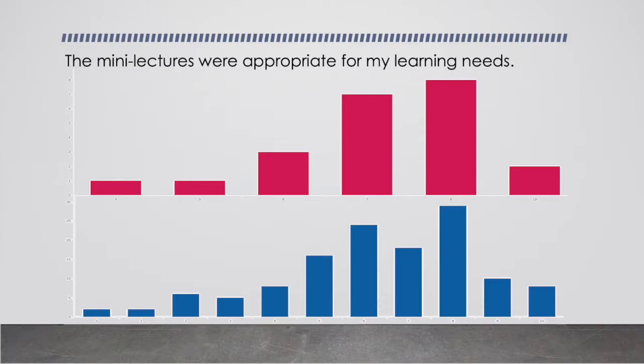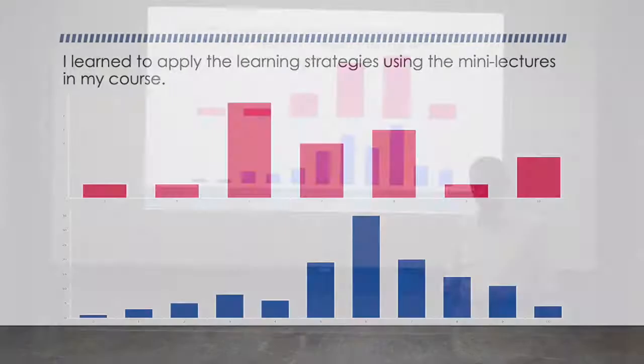The next one, the mini lectures were appropriate for my learning needs. This is something that we asked them because we wanted to make sure that the content of the lecture was suitable for what they thought they needed. And again, we can see that we have a similar range of responses in both courses. Again, the making of Hong Kong, the majority of students chose between 6 to 8. And again, with the process of science, it was in the range of 5 to 8 where the majority of students were satisfied.